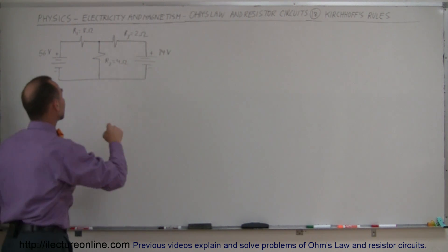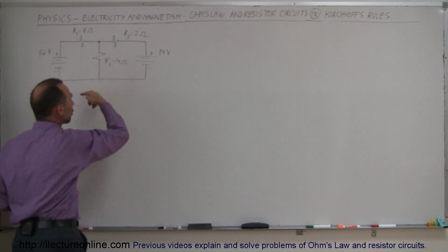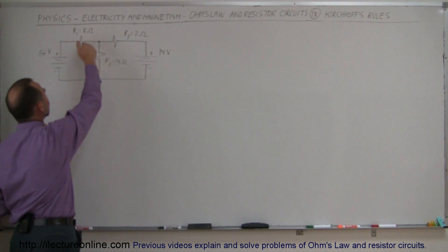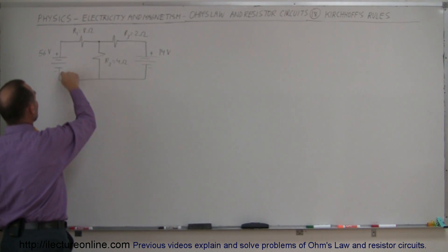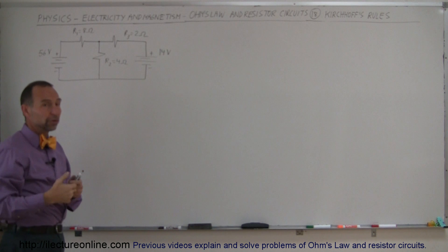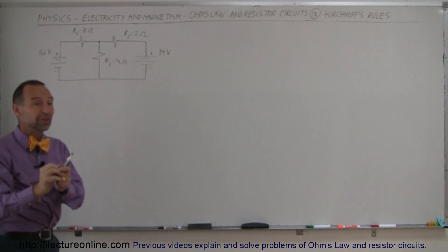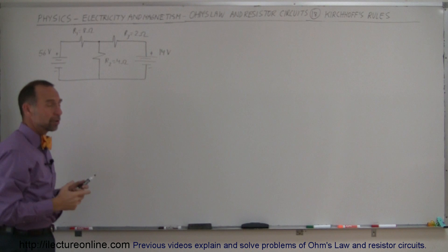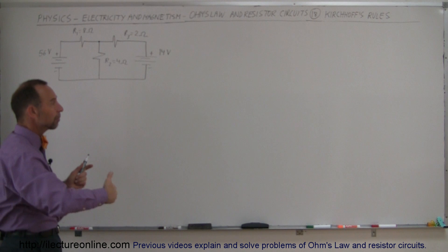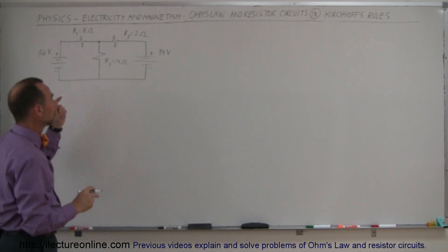Rule number two: Kirchhoff said if you go around any loop — no matter which loop, no matter which direction, clockwise or counterclockwise — all the voltage rises and all the voltage drops add up to zero. Whenever you go across a battery from the negative end to the positive end, there's a voltage rise. Whenever you go across a resistor in the direction of the current, there's a voltage drop. Those two rules together set up circuit equations that allow you to solve for the currents of any branch in any circuit.